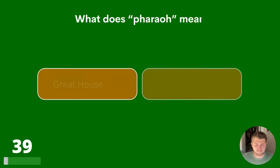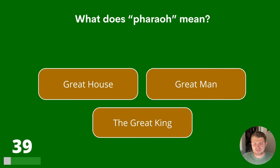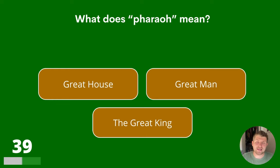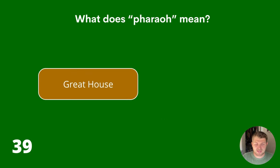Question 39. What does Pharaoh mean? Great House, Great Man or the Great King? The answer is Great House.